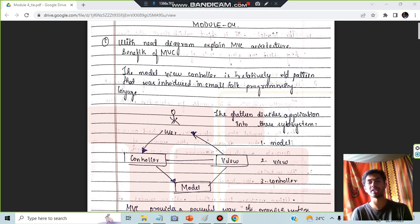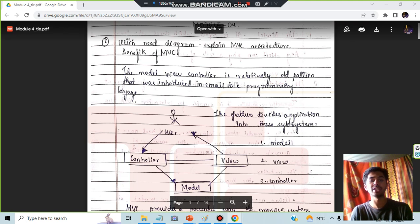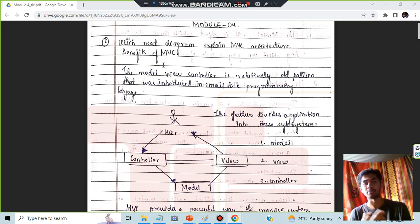You can download that, there are many solutions also available. The first question is with a neat diagram explain the MVC architecture with the benefits of MVC. Before starting, make sure the like button is like this and let's get started. What is MVC? MVC is Model, View, and Controller. Model provides a front-end interface, the View provides what you have to actually do inside that, and the Controller will handle everything.